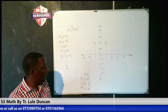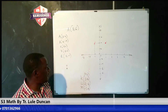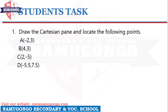I want to give you a task. Draw on the Cartesian plane the following points: A is (-2, 3), B is (4, 3), C is (2, -5). Plot those points on the Cartesian plane and choose a suitable scale.